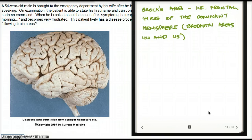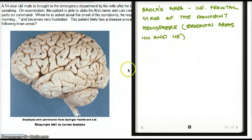Another thing you might not remember so easily: Broca's area is obviously in the inferior frontal lobe. And it's usually in the dominant hemisphere — this area is called Brodmann area 44 and 45. I'm not sure if you really have to remember it for the exam, but I would remember it. So Brodmann area 44 and 45, in the dominant hemisphere — and the left hemisphere is mostly dominant.